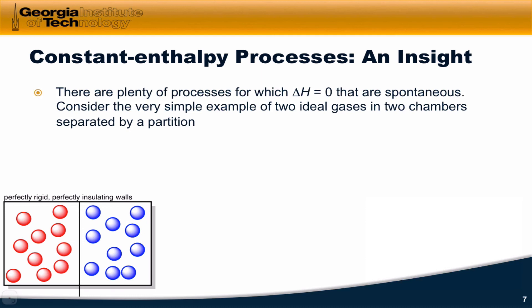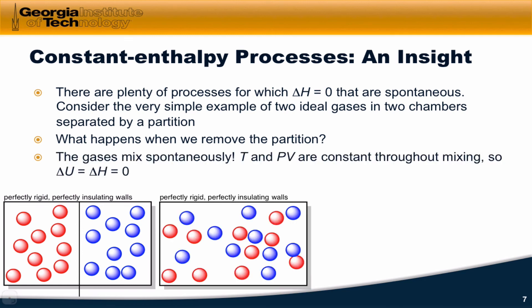One hypothetical process for which the enthalpy change is zero involves the mixing of ideal gases in an isolated vessel. Imagine two gases — red and blue — with equal volumes on either side of a rigid partition within a container with perfectly rigid and insulating walls, so no matter or energy can enter or leave. When we remove the partition, the gases spontaneously mix, but the temperature and the product of pressure and volume are constant throughout the mixing. So delta U equals zero and delta H equals zero.